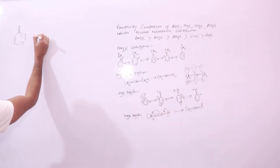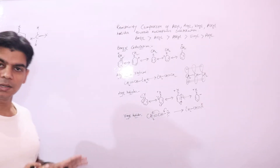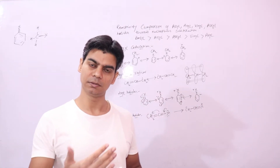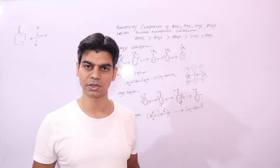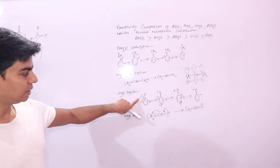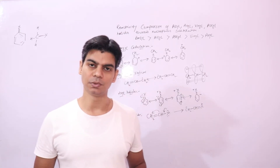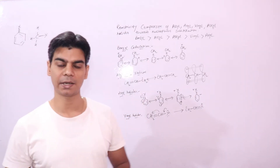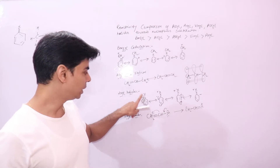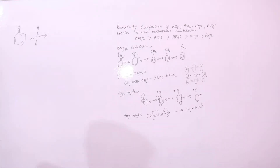In alkyl halides, the C-X bond is purely a single bond. Single bonds are more reactive because they can be easily broken, whereas double bonds are less reactive because you need more energy to break them. So aryl halides are less reactive towards nucleophilic substitution because of this partial double bond character developed due to delocalization of the lone pair on the halogen with the benzene ring.